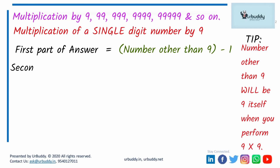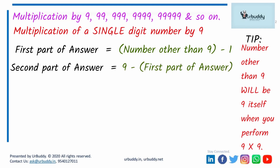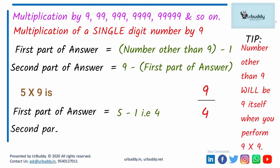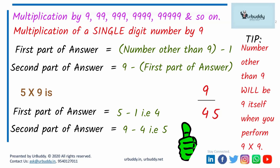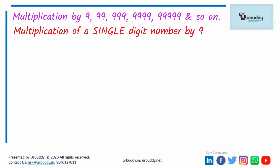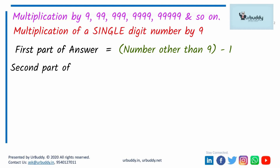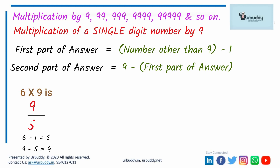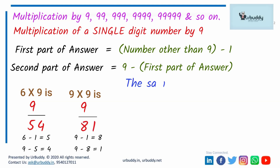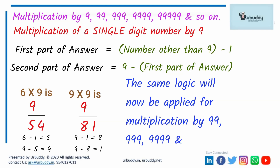To get the second part of the answer, subtract the first part from 9. For example, when you multiply 9 by 5: first part = 5 minus 1 = 4, second part = 9 minus 4 = 5, answer is 45. When you multiply 9 by 6: first part = 6 minus 1 = 5, second part = 9 minus 5 = 4, answer is 54. When you multiply 9 by 9: first part = 9 minus 1 = 8, second part = 9 minus 8 = 1, answer is 81.